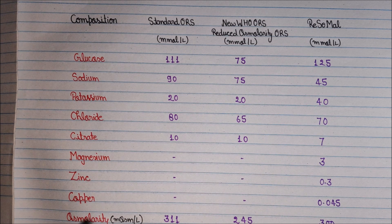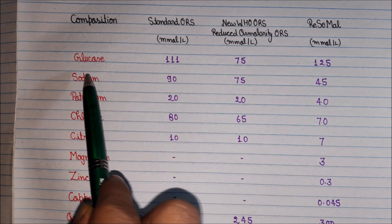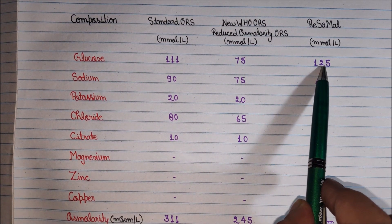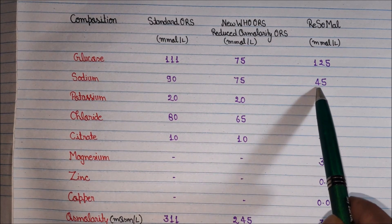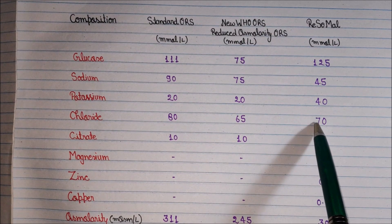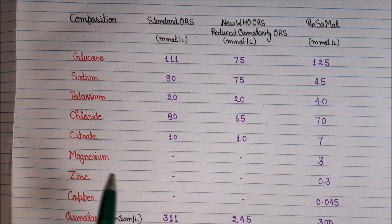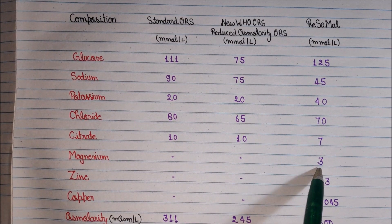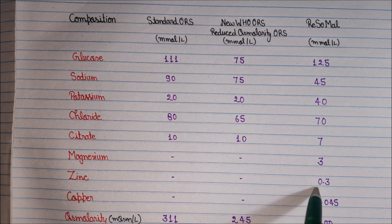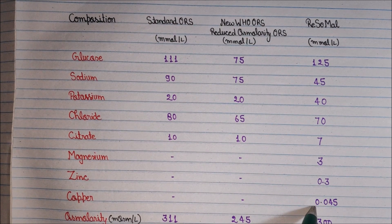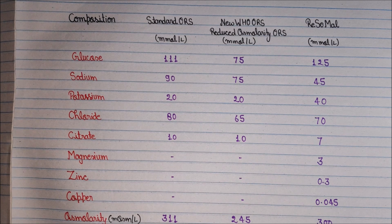The composition of ReSoMal is: glucose at 125 mmol/L, sodium at 45 mmol/L, potassium at 40 mmol/L, chloride at 70 mmol/L, and citrate at 7 mmol/L. In addition, it contains magnesium at 3 mmol/L, zinc at 0.3 mmol/L, and copper at 0.045 mmol/L. The total osmolarity of ReSoMal is 300 mmol/L. This summarizes the basic differences between standard ORS, reduced osmolarity ORS, and ReSoMal.